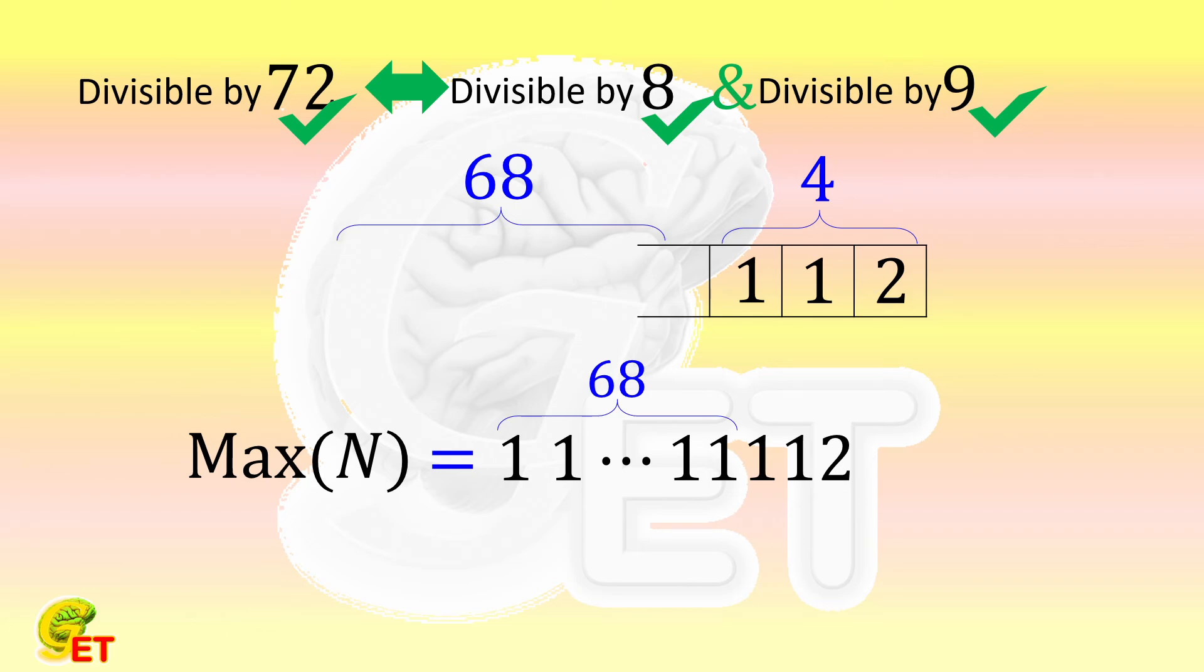Similarly, the minimum value of n is 34 places of 2, followed by 112.